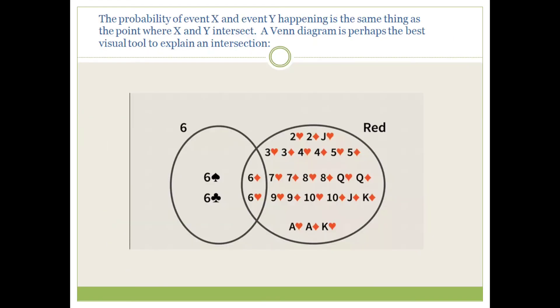The probability of event X and Y happening is the same thing as the point where X and Y intersect. A Venn diagram is perhaps the best visual tool to explain an intersection. You can see in the Venn diagram that the intersection region concerns six of hearts and six of diamonds, the two red sixes.